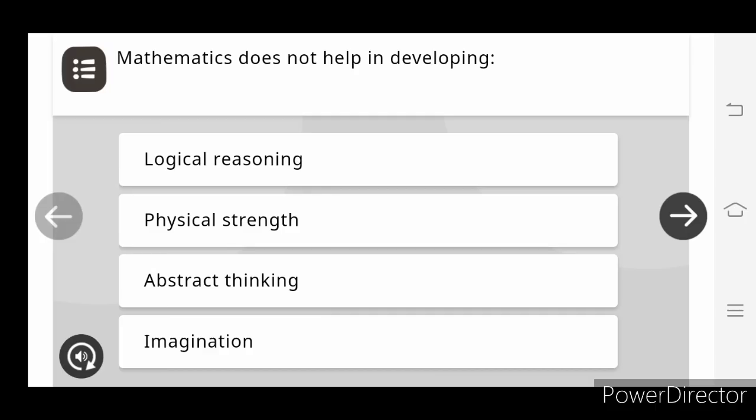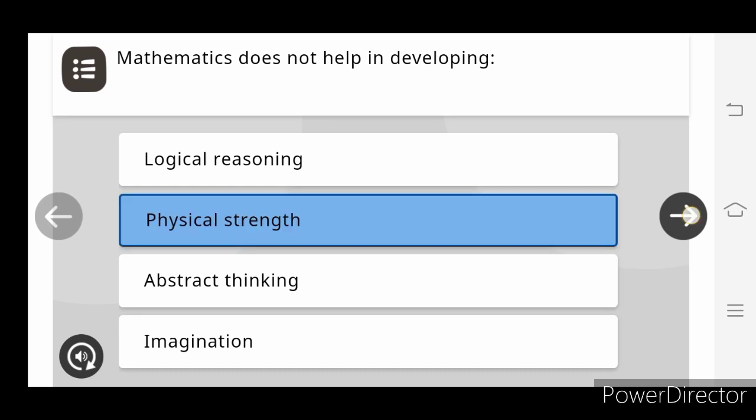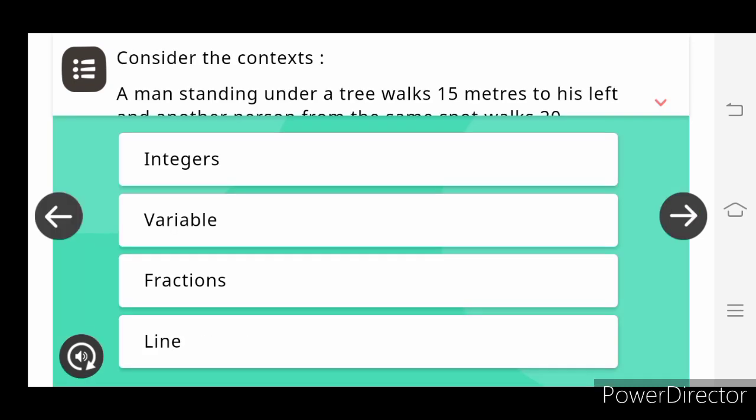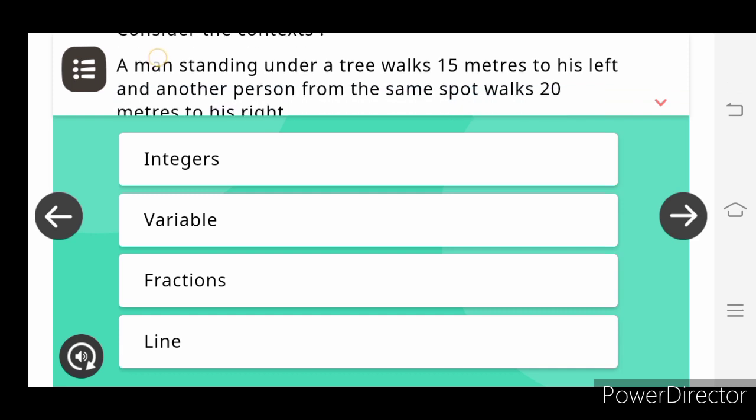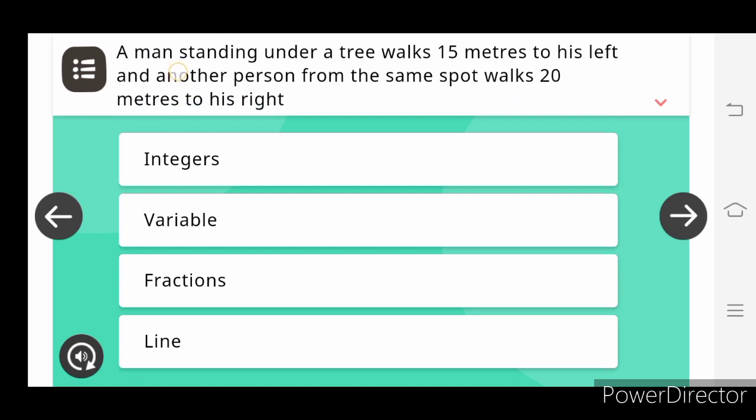Mathematics doesn't help in developing physical strength. Consider the context of a man standing under a tree walks 15 km to his left, and another person from the same spot walks 20 m to his right.